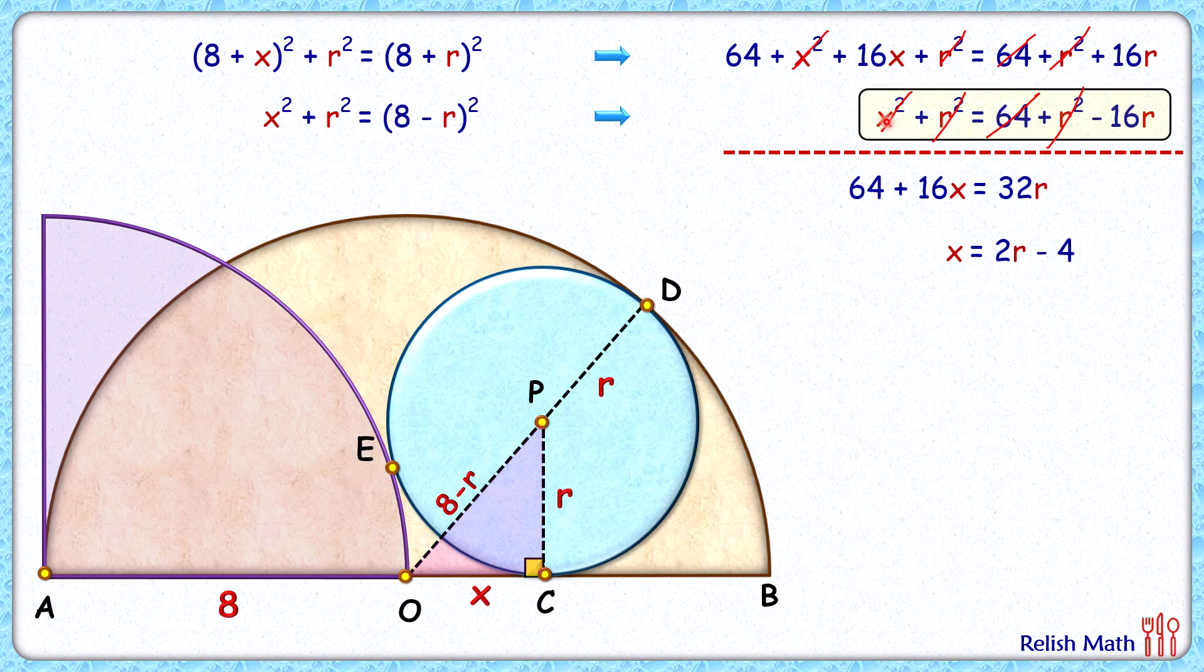Now this value of x, let's apply it in the second equation. That's x² + r² = 64 + r² - 16r. Instead of x, we'll just write (2r - 4)². Now again, (2r - 4)² opening the bracket, we'll get 4r² + 16 - 16r.